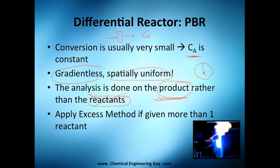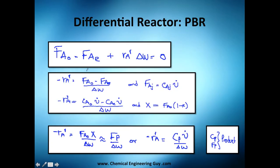We can apply the excess method if given more than one reactant — for example, with Ca and Cb, use one in excess and then the other and continue. In the differential reactor PBR, we have an inlet and an exit. Zero means initial and E will be exit — be sure to use consistent nomenclature. There is generation but no accumulation.